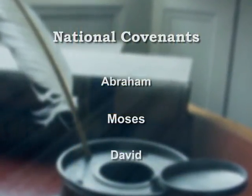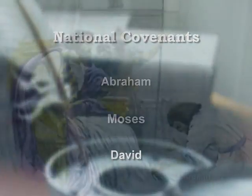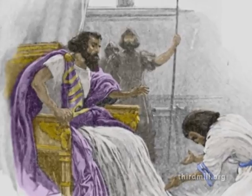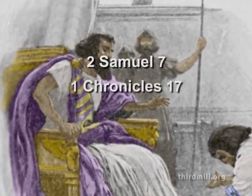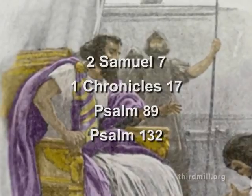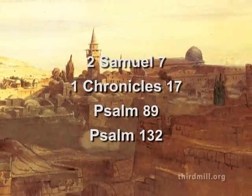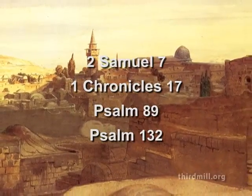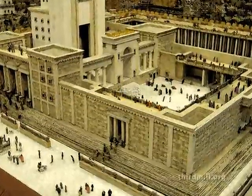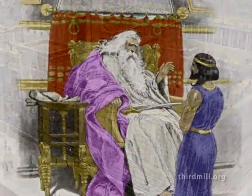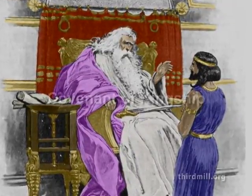Later on, when Israel became a full-fledged empire under the rule of David, God also made a covenant with David. We do not know precisely when in David's life God formally established this covenant, but 2 Samuel chapter 7, 1 Chronicles chapter 17, Psalm 89, and Psalm 132 convey the basic content of David's covenant. David's covenant emphasized kingship in Israel. To be more specific, it promised the endurance of David's royal line, Jerusalem as Israel's capital, and worship at its temple. Although individual descendants of David would suffer when they turned from God, God's choice of David's family as Israel's imperial dynasty would never be forsaken. For this reason, we may call David's covenant Israel's covenant of kingship.